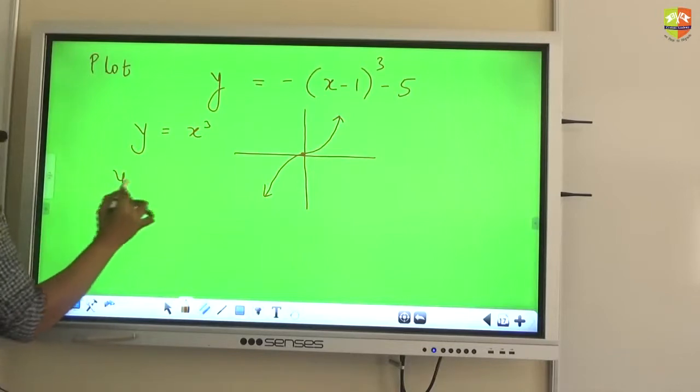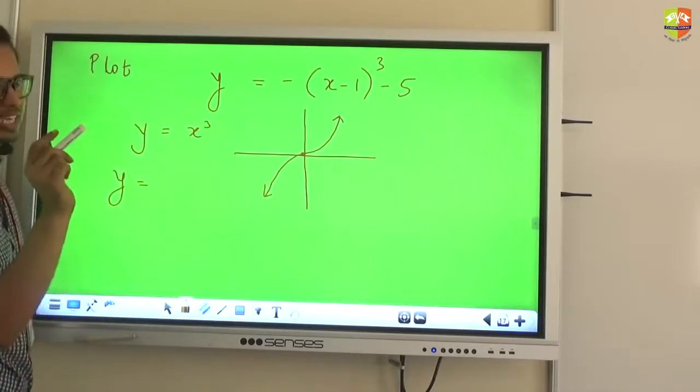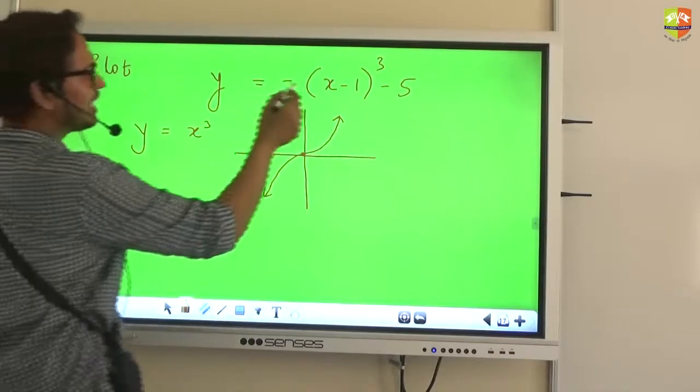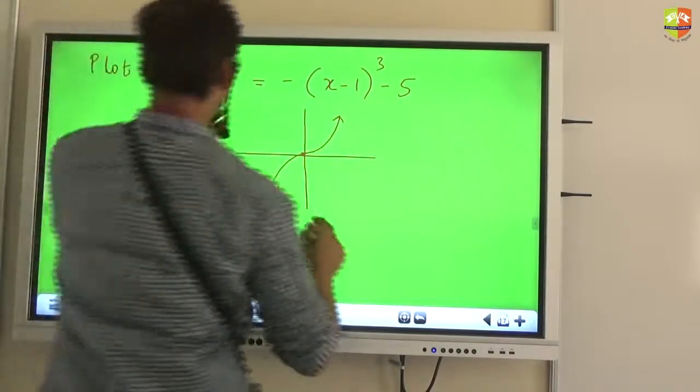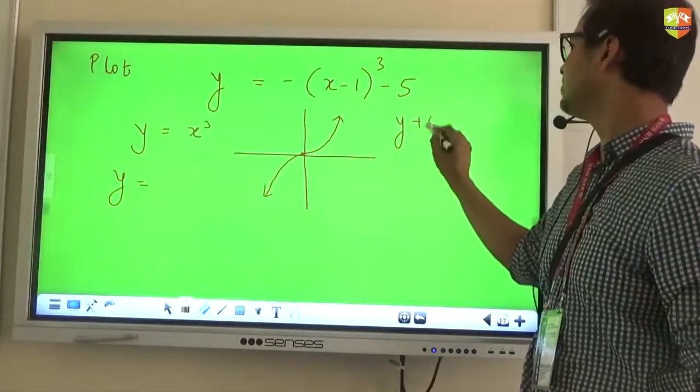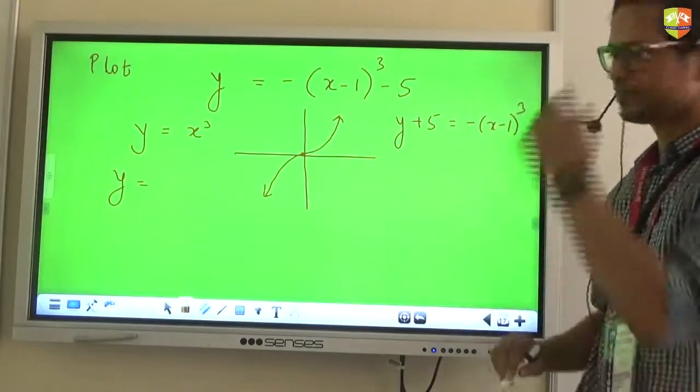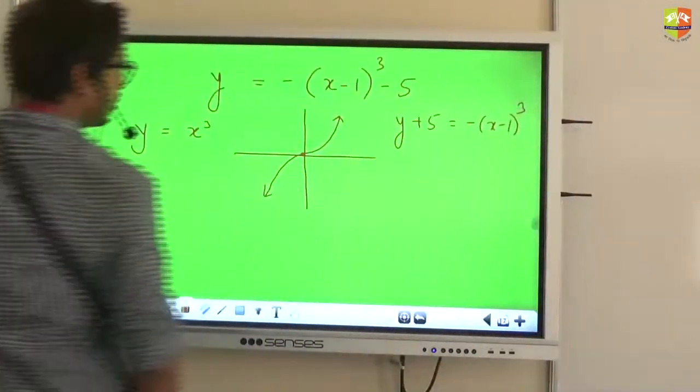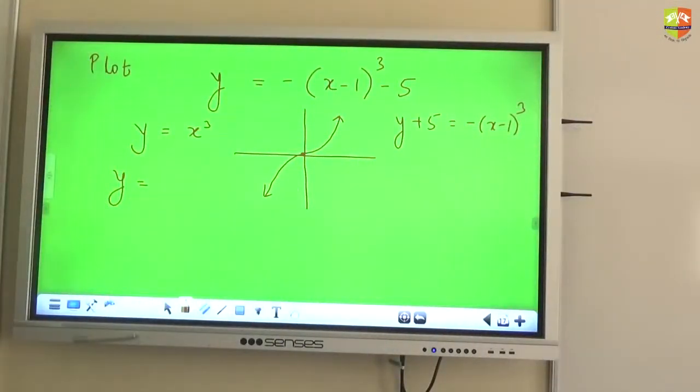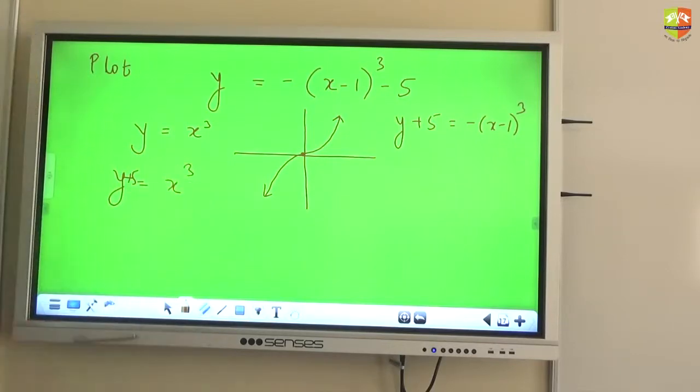Then we make the graph of x cube. Now I will do it with a slight change. Can I write this as y plus 5 is equal to minus x minus 1 whole cube, correct? Now can I do one thing? Can I first do y plus 5? Will that be 5?